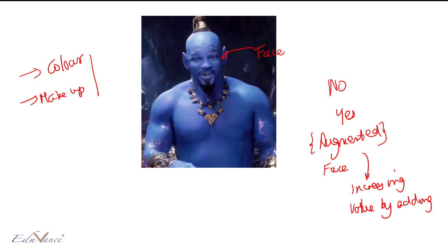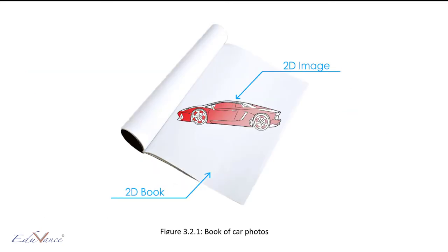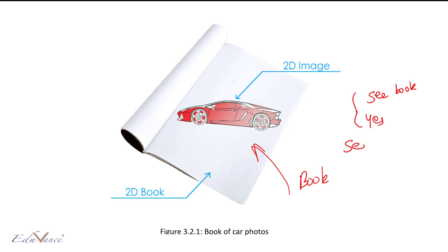Can you tell me what's the meaning of the word reality? Let's say I have this book in front of me — I can see the book. Can I see the car image? Yes. So whatever we can see around us, we call it reality. It's a simple English word.